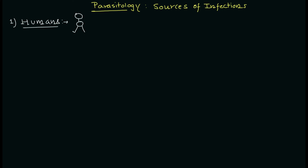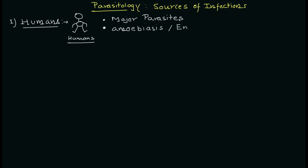The first source is humans. In the case of humans, there are many important parasites that can be transmitted. Examples include Entamoeba histolytica and Giardia. The parasitic diseases that can be caused through human sources include amoebiasis and enterobiasis. If the infection is transmitted from one human to another, we can call it anthroponosis.